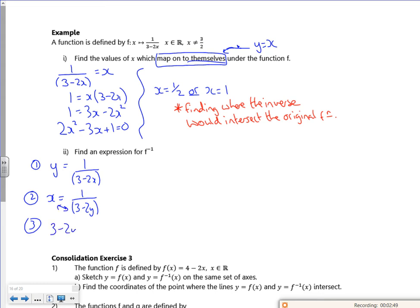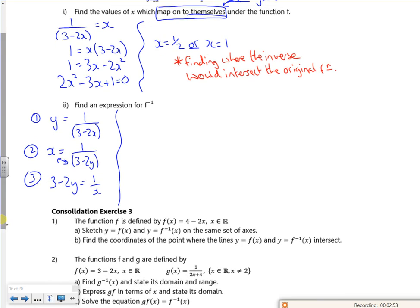So 3 minus 2y is 1 over x. I'm going to put the 2y back on that side and put the 1 over x over there. So I've got 3 minus 1 over x equals 2y. Now if I divide through by 2, I'm going to get 3 over 2 minus 1 over 2x is y.